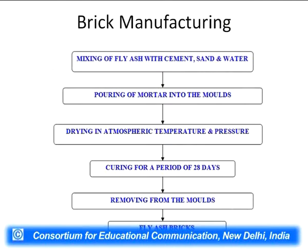Another type of fly ash brick is made by mixing soil, plaster, fly ash, and water and allowing the mixture to dry — no heat is required. This technique reduces air pollution. More modern manufacturing processes use a greater proportion of fly ash and a high-pressure manufacturing technique, which produces high-strength bricks with environmental benefits. The brick production process involves: mixing fly ash with cement, sand, and water; pouring of mortar into molds; drying at atmospheric temperature and pressure; curing for a period of 28 days; and then removing from the molds — fly ash bricks are produced. So there is no need for a furnace, no need for fuel or coal, and ultimately we are saving fuel and the environment.